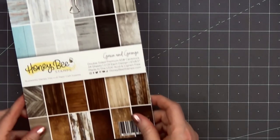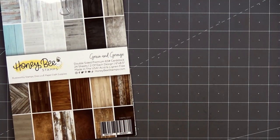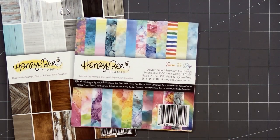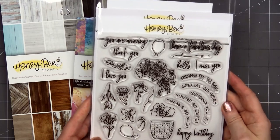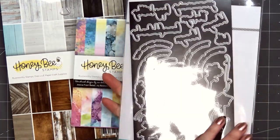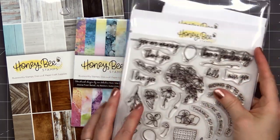Hello friends, it's Kristi Marcotte. In today's video I'll be using Honeybee Stamps Grain and Grunge paper collection, also a little bit of their Team Tie-Dye collection.